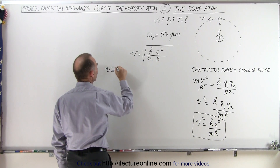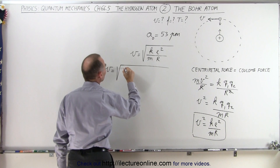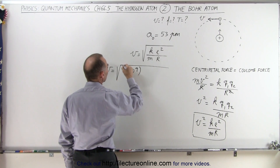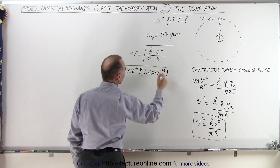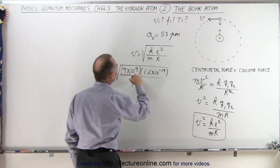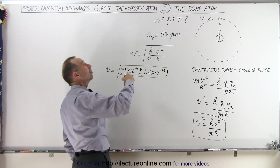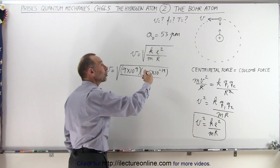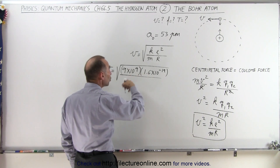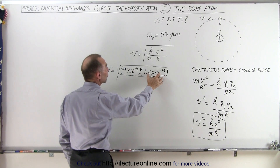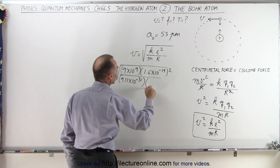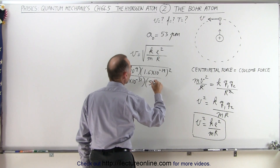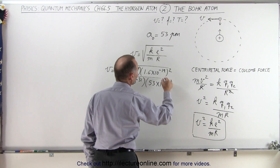Plugging in the numbers, we have v is equal to the square root of k, which is 9 times 10 to the 9th — k would of course be Newtons meters squared per Coulomb squared — times e, which is 1.6 times 10 to the minus 19th Coulombs, and of course this has to be squared. Mass is in kilograms: 9.11 times 10 to the minus 31, and r, the radius, we now know is 53 times 10 to the minus 12.